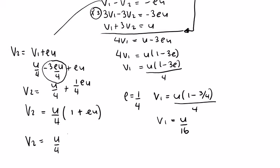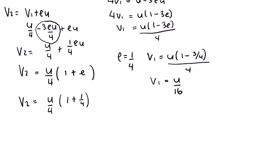And v2 = (u/4)*(1 + 1/4) = (u/4)*(5/4) = 5u/16. So v1 = u/16 and v2 = 5u/16.